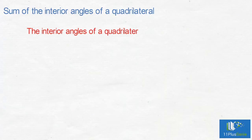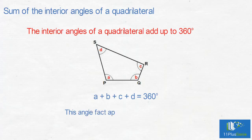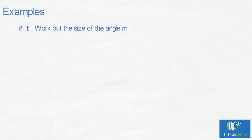The interior angles of a quadrilateral add up to 360 degrees. In this quadrilateral, A plus B plus C plus D equals 360 degrees. This simple fact applies to all quadrilaterals.